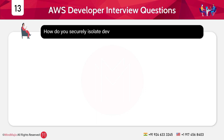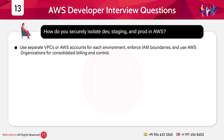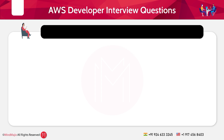Question 13: How do you securely isolate developer, staging, and production environments in AWS? Answer: Use separate VPCs or AWS accounts for each environment. Enforce IAM boundaries and use AWS Organizations for consolidated billing and control. This improves security and manageability.